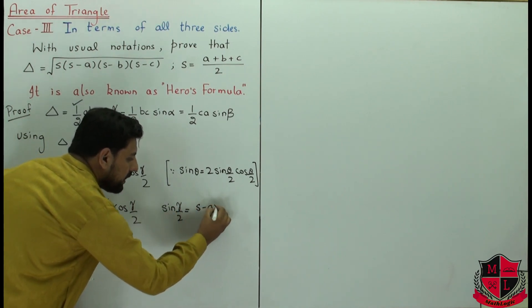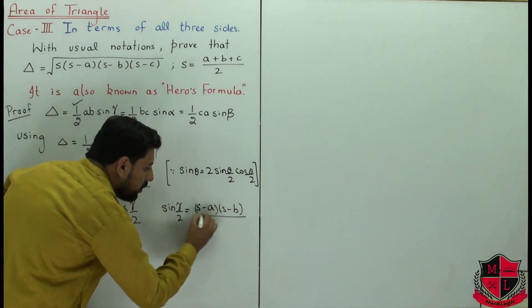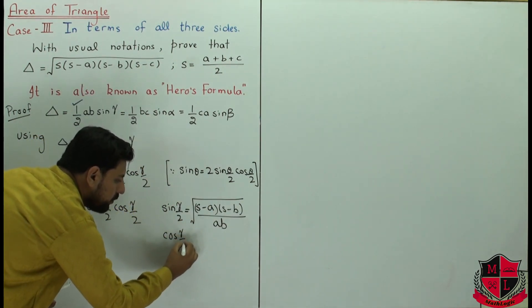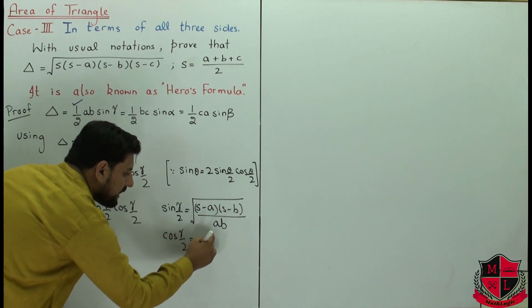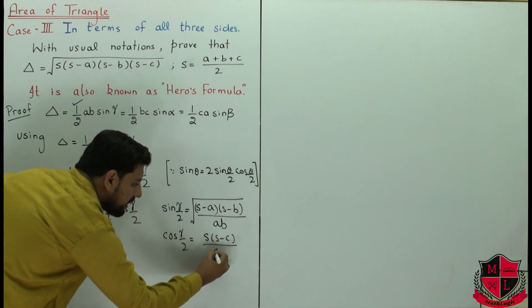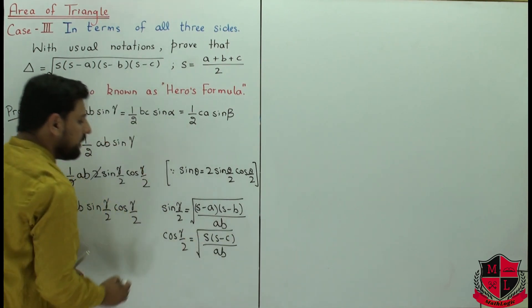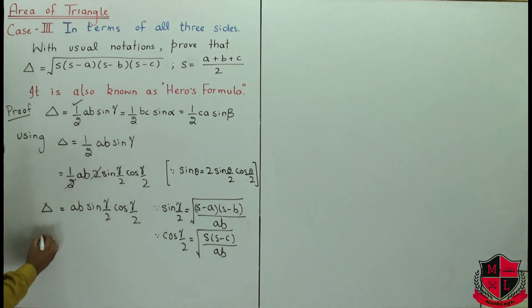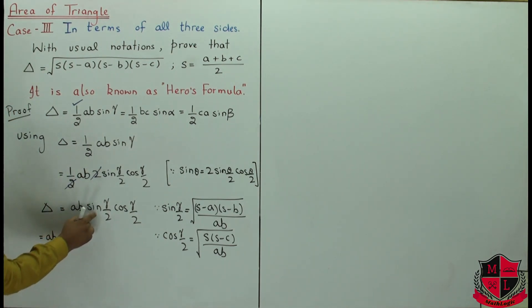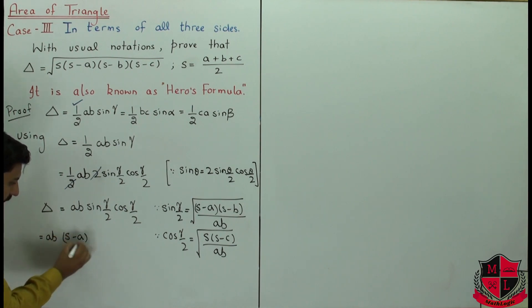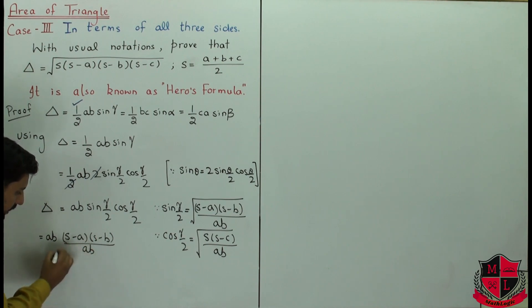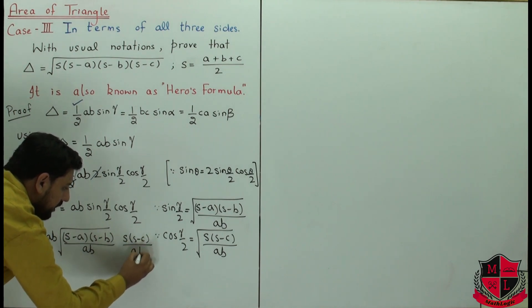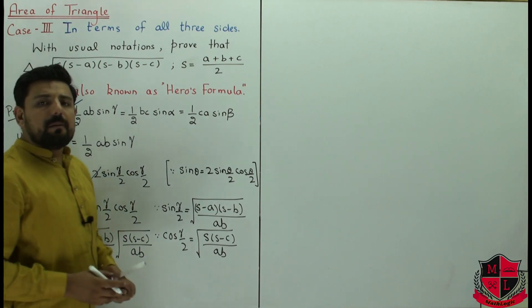From the half-angle formulas (covered in section 12.5), sine of gamma over 2 equals the square root of (s minus a)(s minus b) over ab, and cosine of gamma over 2 equals the square root of s(s minus c) over ab. Now we substitute both these values into our area formula.